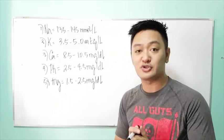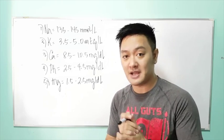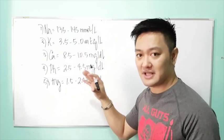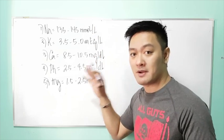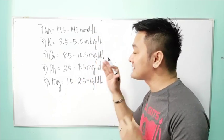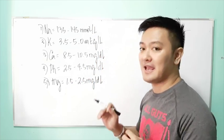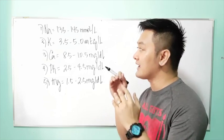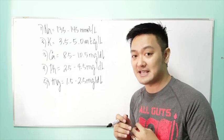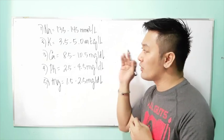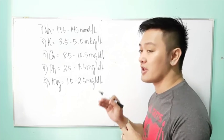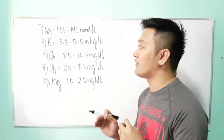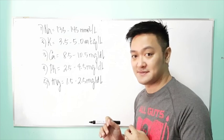Some books list magnesium as 1.8 to 2.7. Remember, these are common electrolytes you need to know. Please do not forget that electrolytes are usually linked with different disorders or diseases. In your examination, pay attention to common ECG tracings of different electrolyte imbalances.